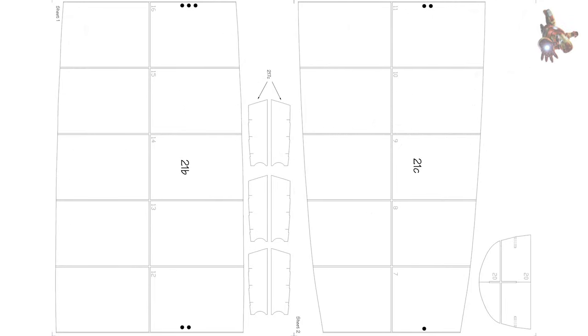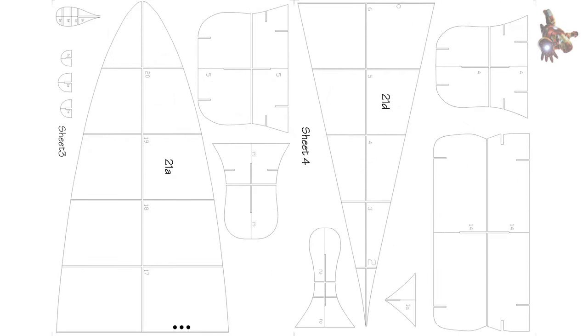Glue parts 37 beneath the main deck and affix the deck onto the frame, noting the sharp bend between deck elements 24b and 24c.